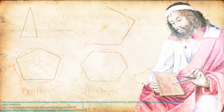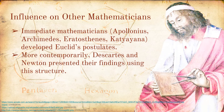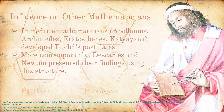There is a long list of mathematicians who further developed Euclidean geometry. Apollonius and Archimedes developed upon his concepts in the years following his death. More recently, Descartes and Newton presented their works using Euclid's format, progressing from the first principles to more complicated concepts.